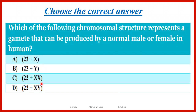22 + X here gives a total of 24 chromosomes, so this is an abnormal gamete. And this 22 + X is also an abnormal gamete. So we have A and B — both are normal gametes. He is asking which one can be produced by a normal male or female.